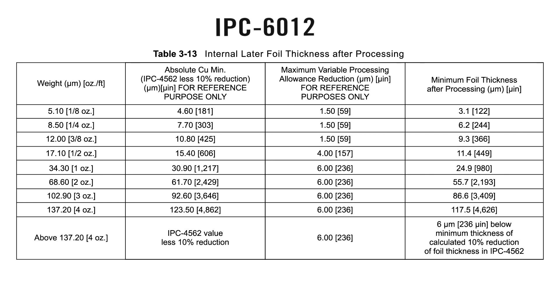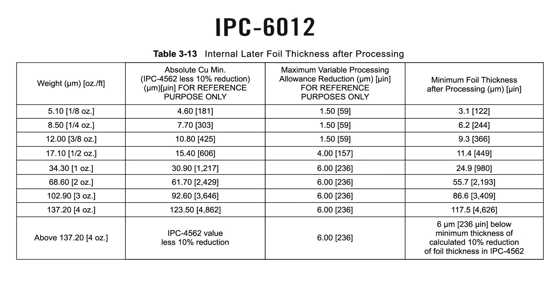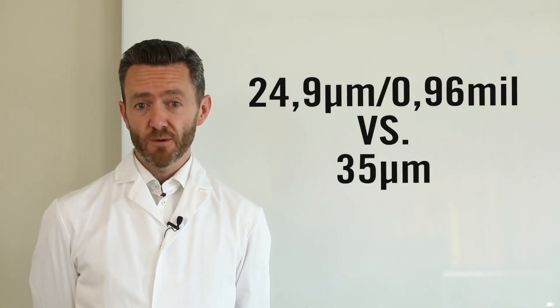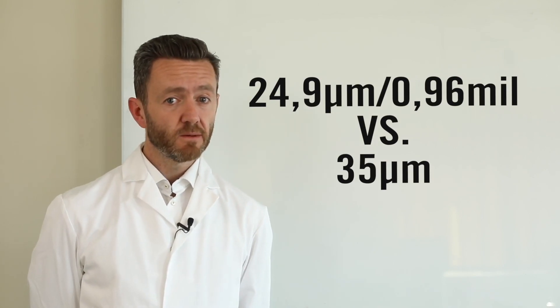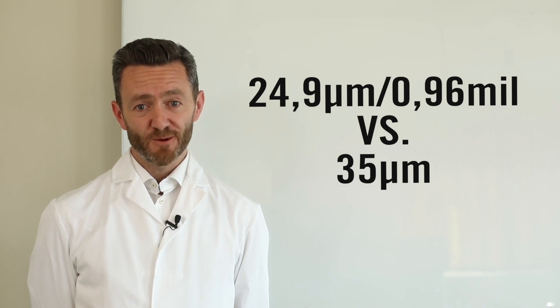However, this also allows for a 10% tolerance on the produced foils, which means that a one ounce inner layer foil could be received at the PCB factory with a thickness of 30.9 microns, or 1.217 mil. From there, we also see that there is a 6 micron, or 0.24 mil, reduction allowed for the pretreatment of the copper foil during the process of the PCB factory, prior to imaging and also prior to bonding. So the minimum copper foil thickness after processing, for a one ounce copper foil, may be 24.9 microns or 0.96 mil, which is a little bit different than the 35 microns perceived.